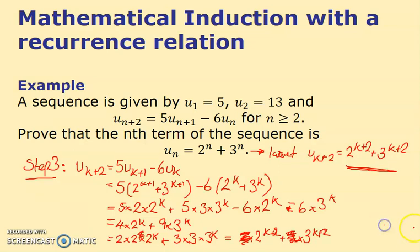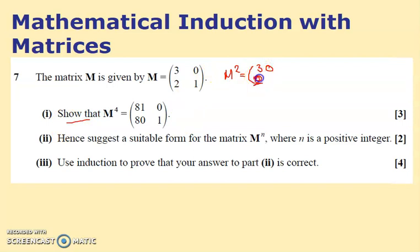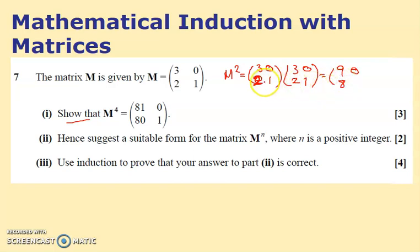The last example I've got is a matrix one — the third type we saw in the Year 12 textbook. It says M = [[3,0],[2,1]] and asks us to show that M⁴ equals a given answer. I'll do the proper work: M² = M×M = [[3,0],[2,1]]×[[3,0],[2,1]] = [[9,0],[8,1]]. And since M⁴ = (M²)², I square that result.